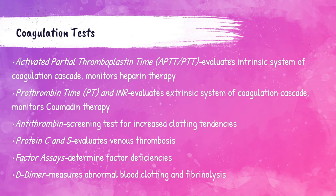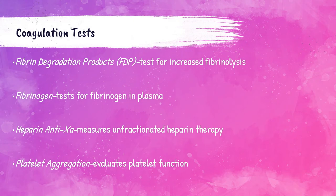The coagulation department also tests antithrombin, used as a screening test for increased blood clotting tendencies, and protein C and S, which evaluates for venous thrombosis — blood clots in the veins. Factor assays determine if the patient has a factor deficiency that interferes with the blood's ability to clot. The D-dimer test measures abnormal blood clotting and looks for fibrinolysis — the breakdown of blood clots. Fibrinogen testing, heparin anti-Xa for monitoring anticoagulation therapy, and platelet aggregation to evaluate platelet function are also performed.